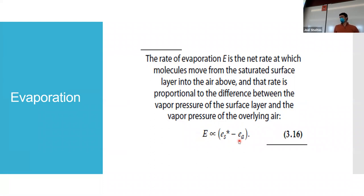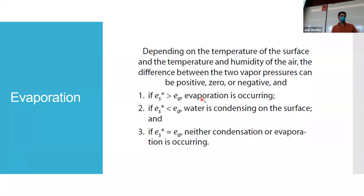That's intuitive, right? When it's really dry, things evaporate quickly. When it's really moist in the air — relative humidity is high — evaporation rates tend to be lower, all things being equal. Depending on the temperature of the surface and the temperature and humidity of the air, the difference between the two vapor pressures can be positive, zero, or negative. If our vapor pressure in the air is not 100%, we get evaporation. If it's less, we have water condensing — meaning there's more water vapor in the air than on the water surface. Usually we have a vapor pressure less than saturated vapor pressure, so evaporation is occurring.